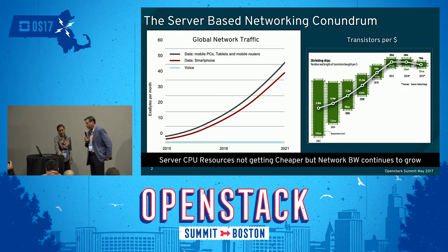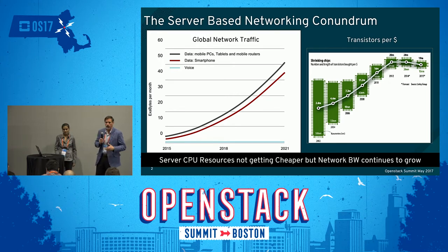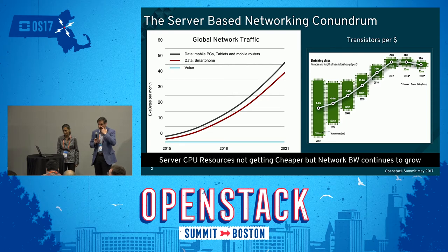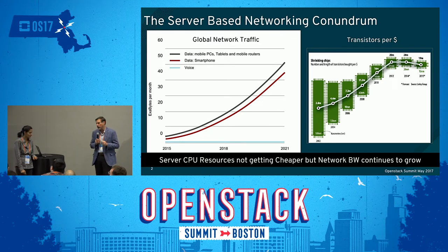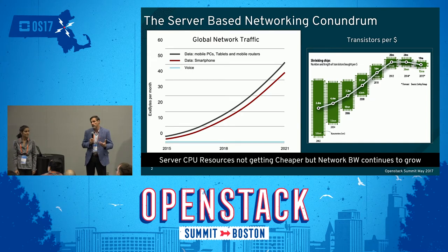Anita's going to talk in detail about some of the options for server-based networking data path implementation, but I'm going to start off with a description of the problem statement. Everybody's seen this chart about global network traffic exploding and going off the chart. The problem is even worse for NFV because in data centers implementing NFV, we're doing a lot of service chaining where traffic is bouncing back and forth between different services running in different VMs and containers. So east-west traffic is growing even faster. On the right side, we see that silicon is not getting any cheaper — costs are leveling off and we're not getting the benefits of Moore's Law, meaning we need to be very smart about how we implement data path functions to get good cost in the data center.